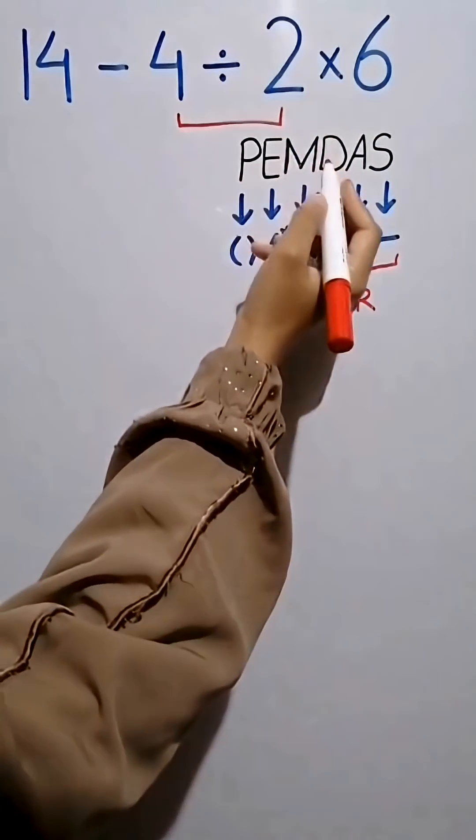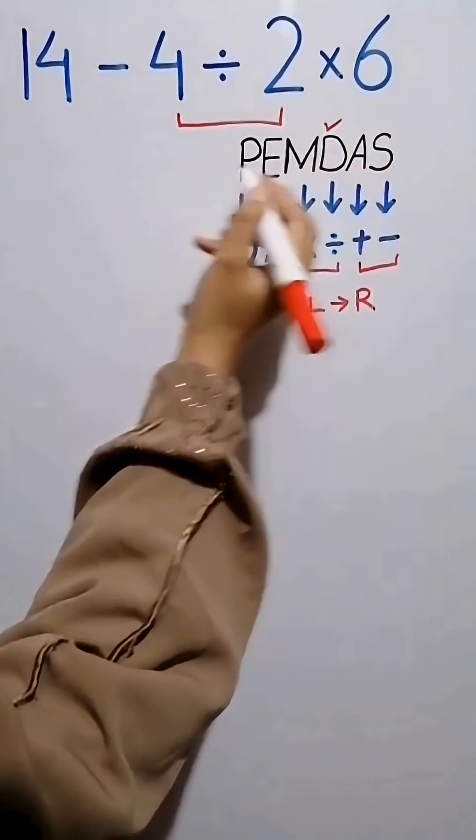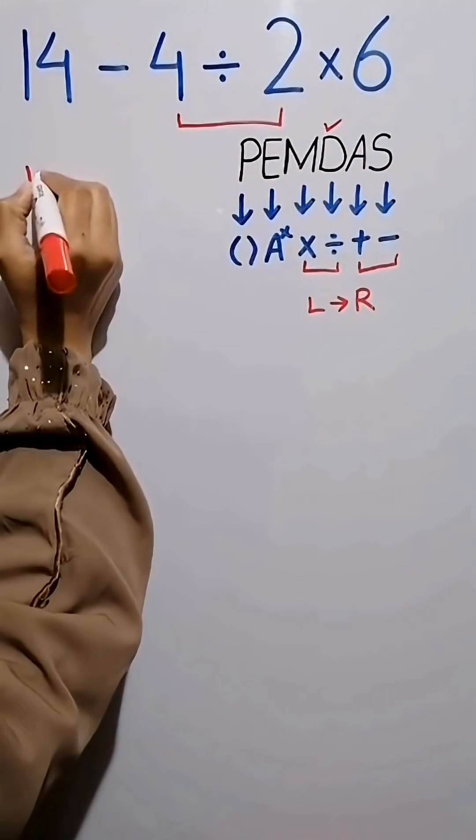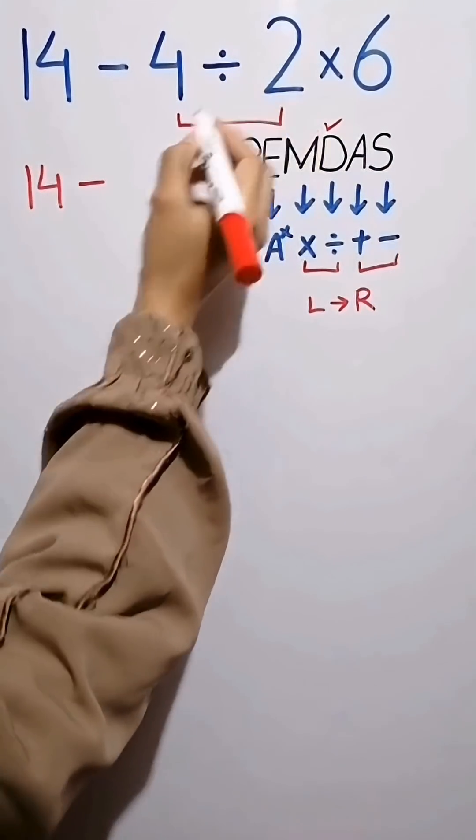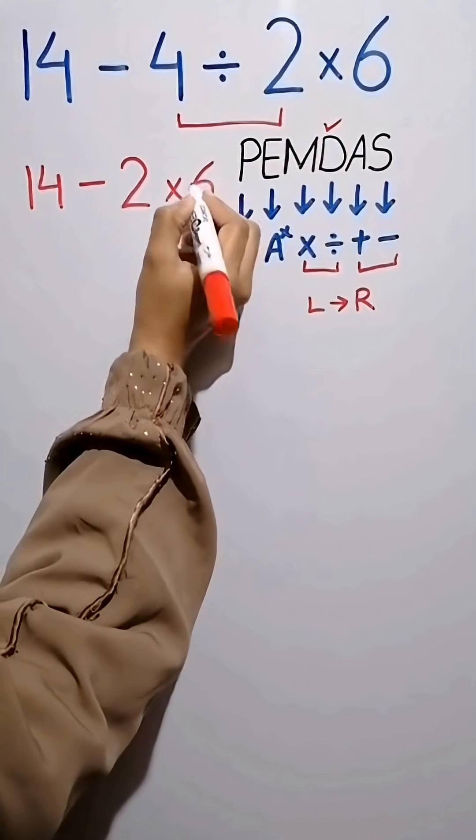because division has higher priority than subtraction. Now we simplify this expression to 14 minus 4 divided by 2 then times 6. In this step,